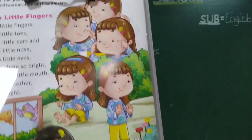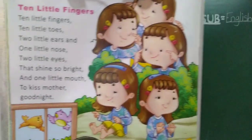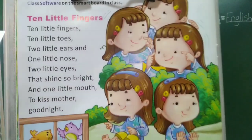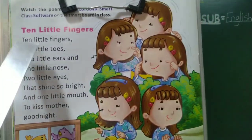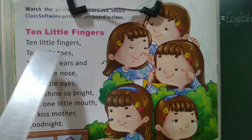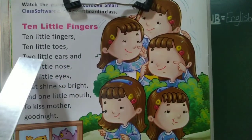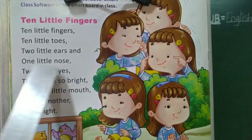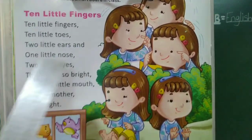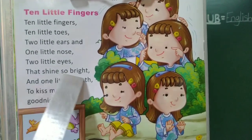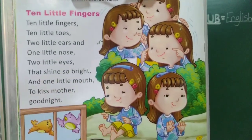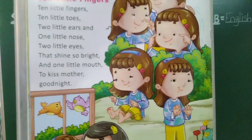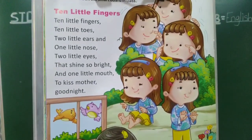Once again we read this rhyme — you say after me. Ten little fingers. Ten little toes. Two little ears and one little nose. Two little eyes that shine so bright. And one little mouth to kiss — Mother goodnight.